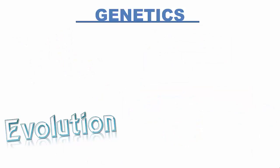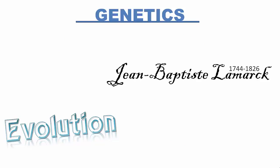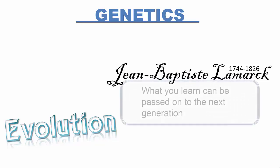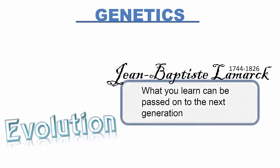There are two major views of evolution. Lamarck believed that what you learn can be passed on to your offspring. For Lamarck, if you practice running, your kids will be faster runners.